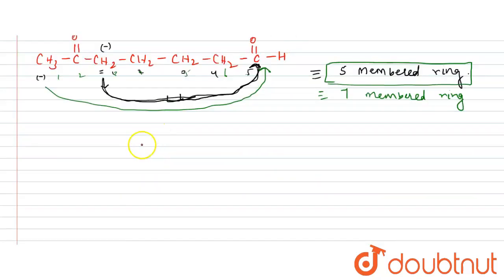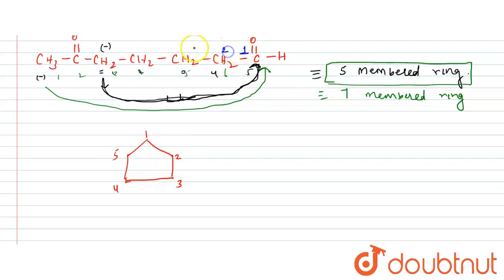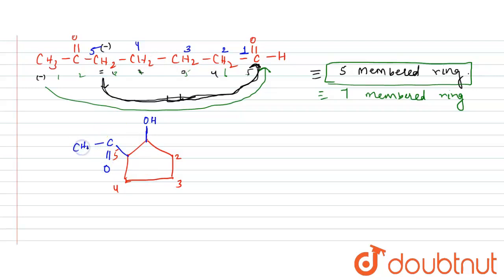Let's draw the five-membered ring to give the intramolecular product. Numbering the ring: 1, 2, 3, 4, 5. At position 1, you have the OH group (or O⁻). The attack takes place at position 5, so at position 5 you have C=O–CH3. This gives the full structure of the five-membered ring aldol addition product.